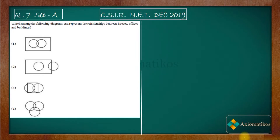Hello dear students, welcome to ExeoMatic course. This video is part of the solution series for CSIR-Net December 2019. We are doing problem 7 from the general aptitude part. The question asks: which among the following diagrams can represent a relationship between houses, offices, and buildings?